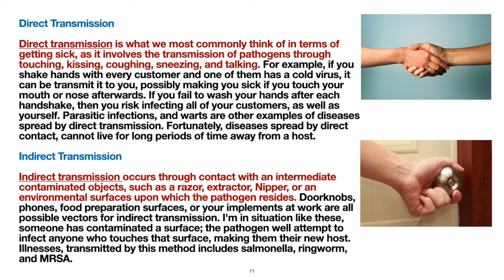Indirect transmission occurs through contact with an intermediate contaminated object, such as a razor, an extractor, a nipper, or an environmental surface upon which the pathogen resides. Doorknobs, phones, food preparation surfaces, or implements at work are all possible vectors of indirect transmission. In these situations, someone has contaminated a surface; the pathogen will attempt to infect anyone who touches that surface. Illnesses transmitted by this method include salmonella, ringworm, and MRSA.